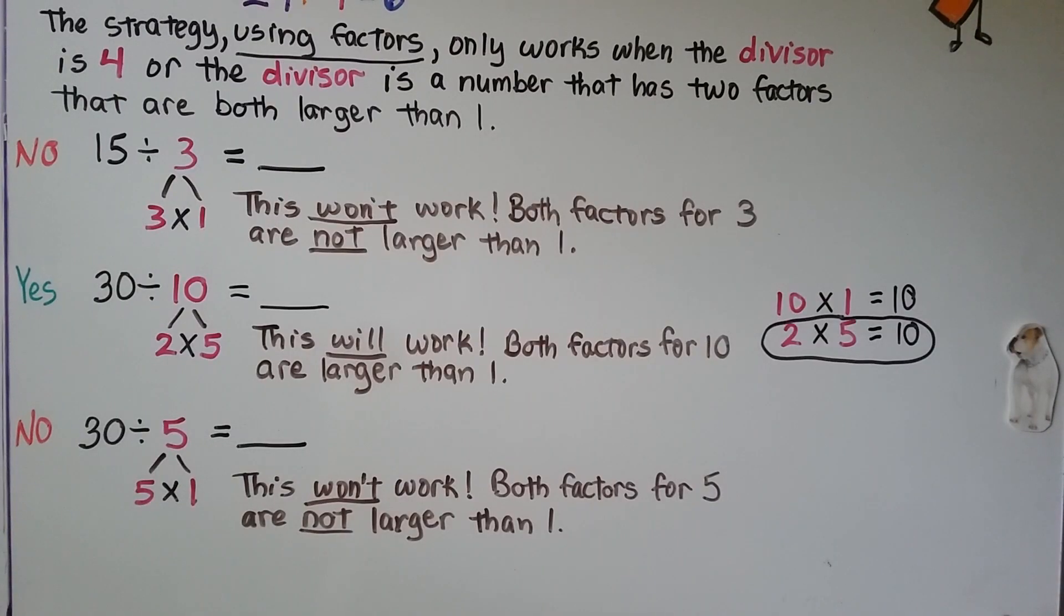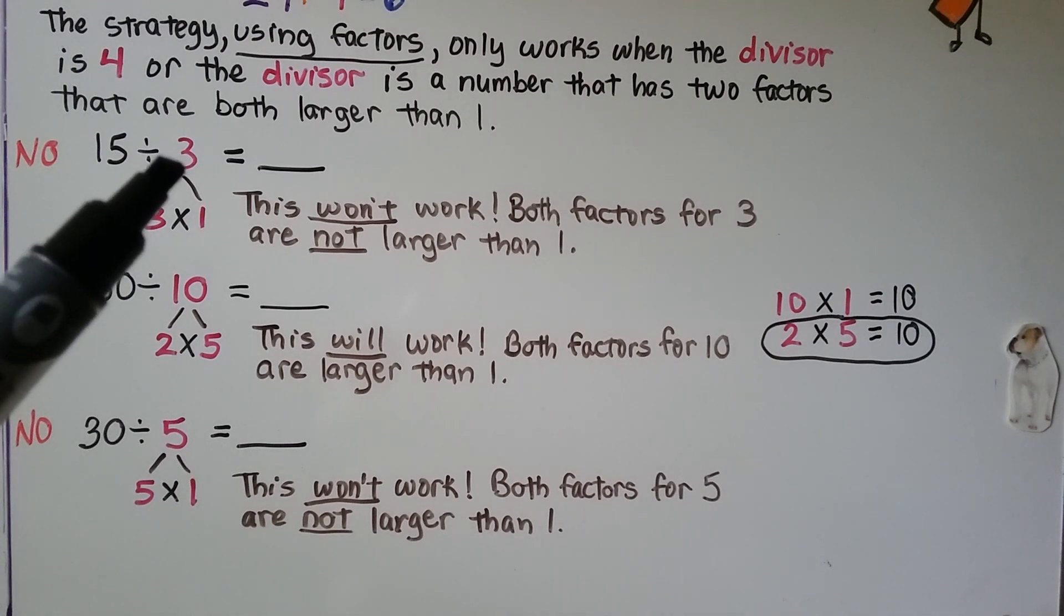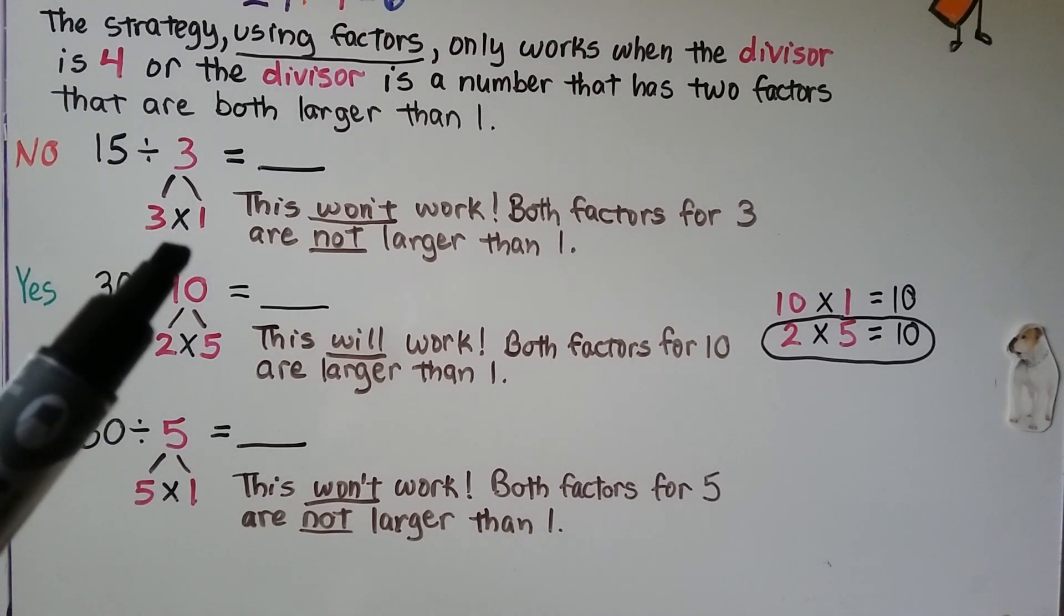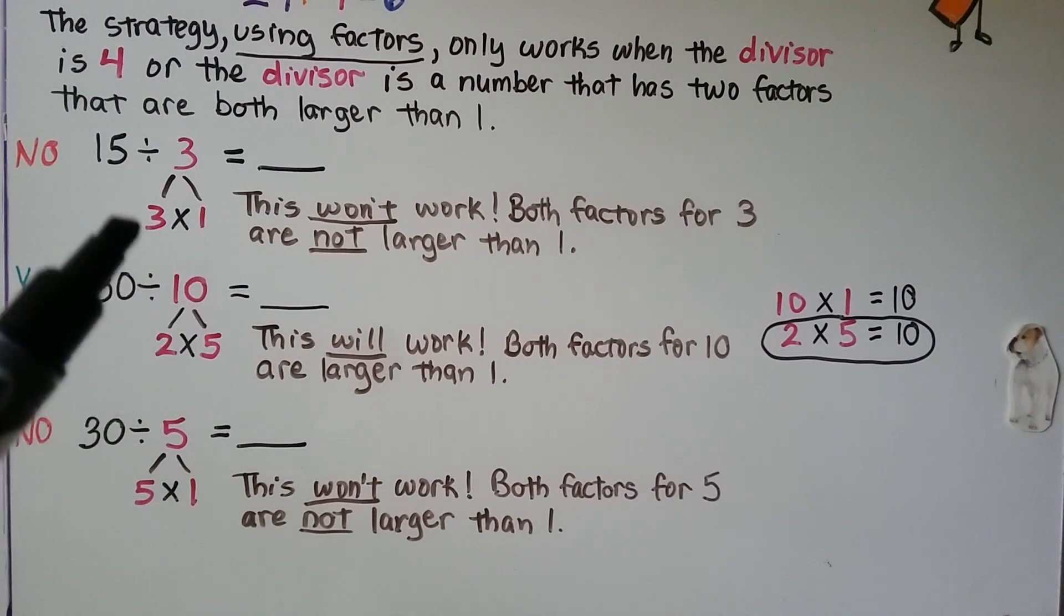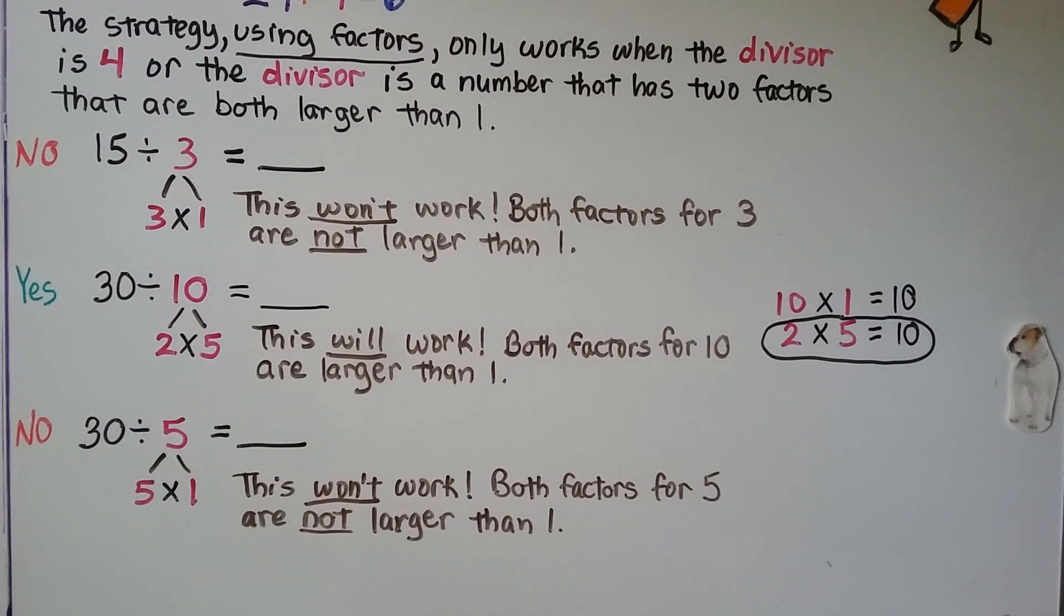The strategy using factors: we have to have 2 factors that are both larger than 1. If we look at 15 divided by 3, the factors for 3 are 3 and 1. This won't work. Both factors for 3 are not larger than 1. We have a 1 here, so that won't work. We can't use factors.